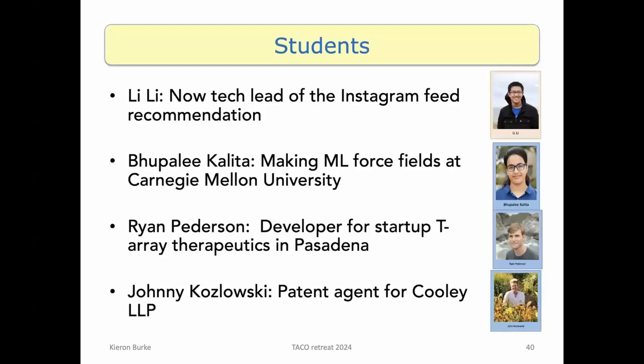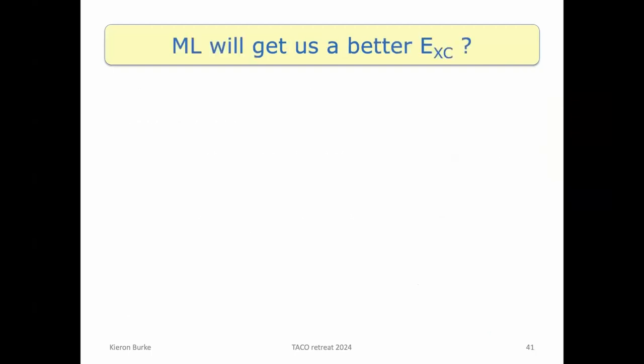But OpenAI, $86 billion, right? The ones who gave you ChatGPT. And actually it's gone up since February. This is what happened to the students work I've been mentioning. Li Li, he likes to say he used to work for the good of humanity and now he doesn't. He tries to waste humanity's time. Bhupalee Kalita, who then did a paper on weakly correlated systems, now makes force fields. Carnegie Mellon. Ryan, who was very, very good, has a startup in bio and pharmaceutical discoveries. And then Johnny, we didn't really go into his work, ended up as patent agent.